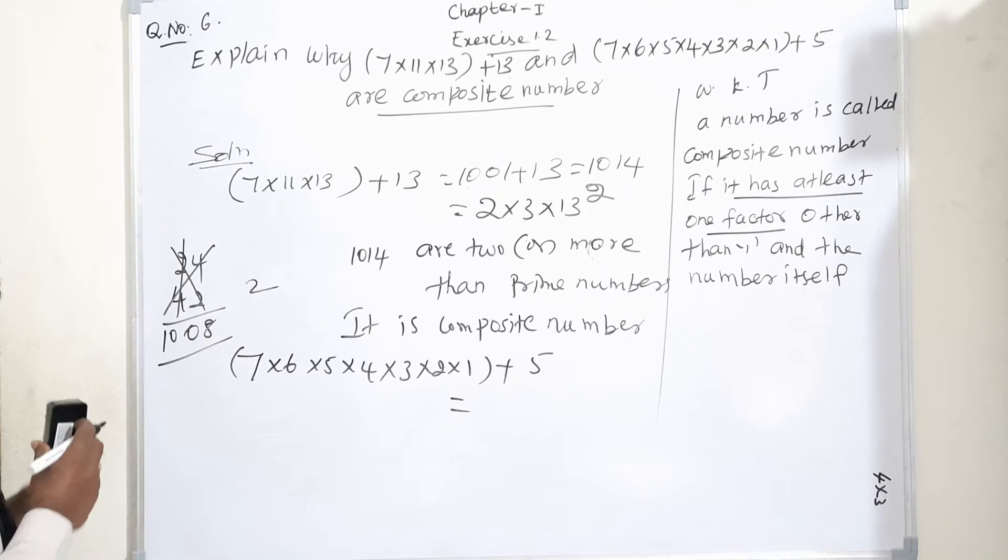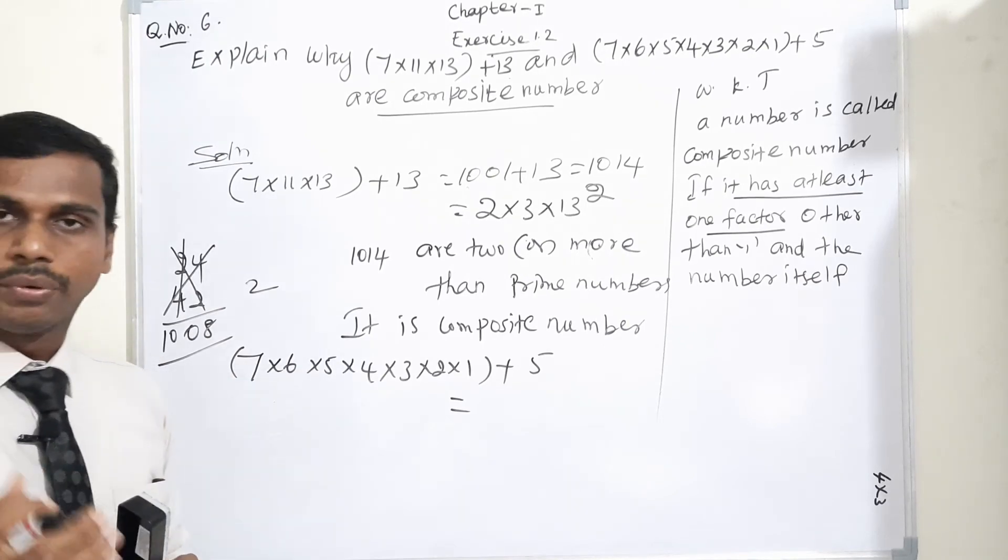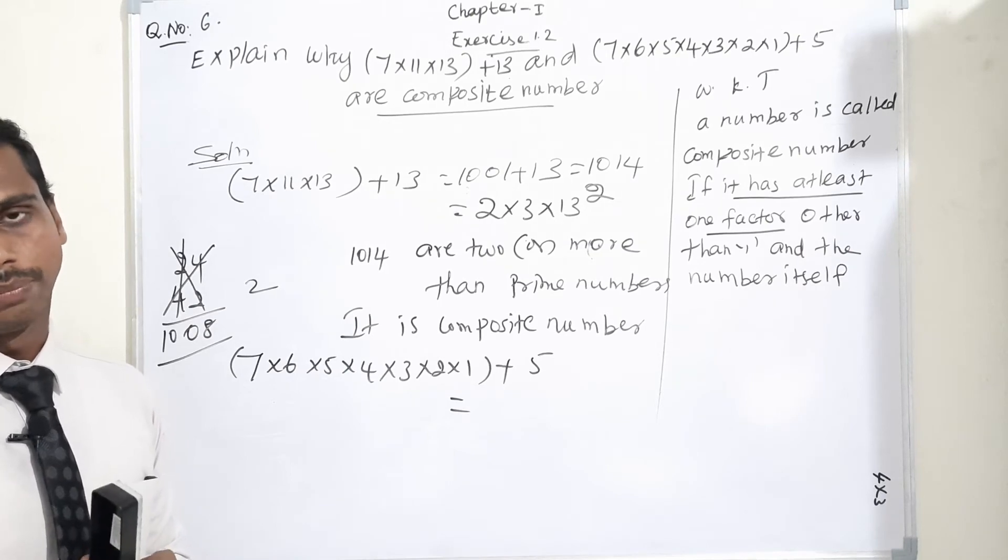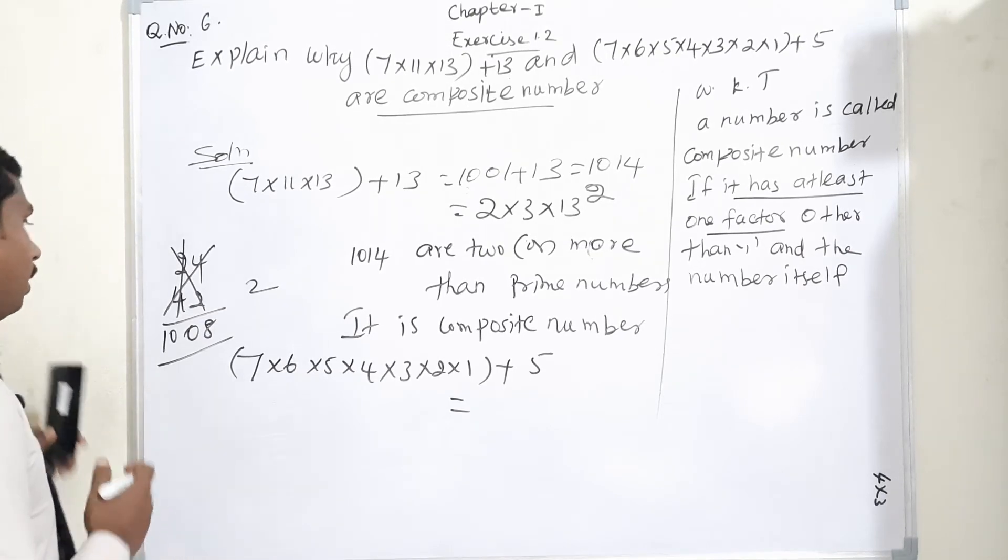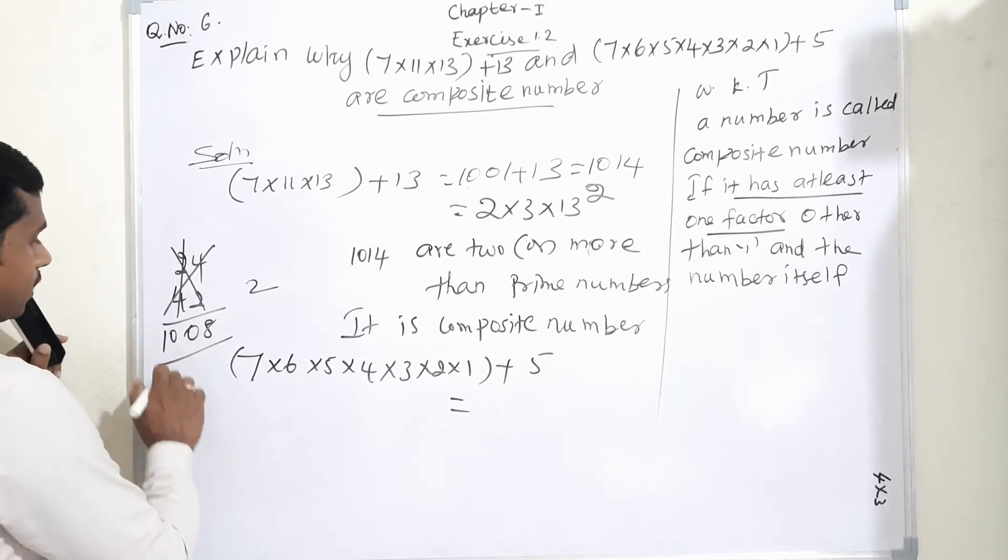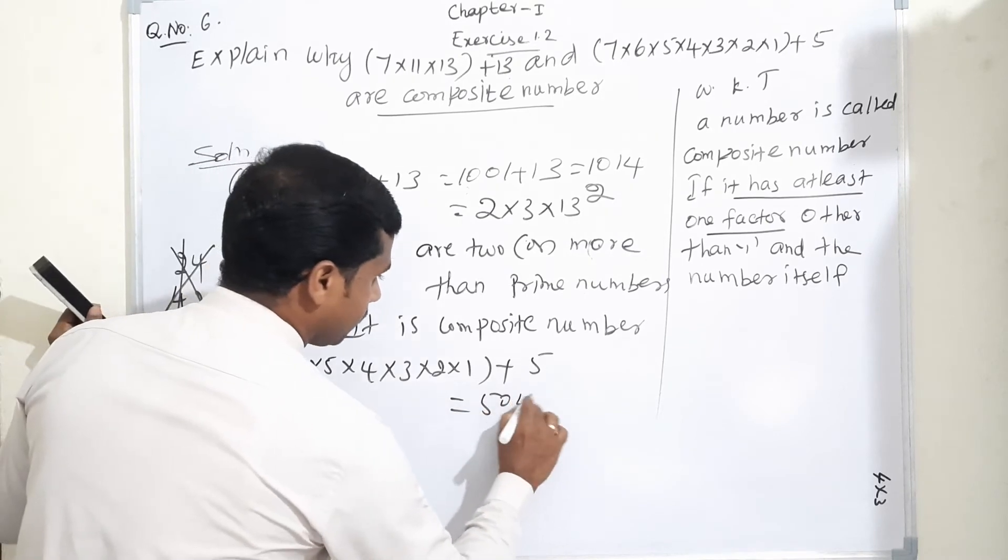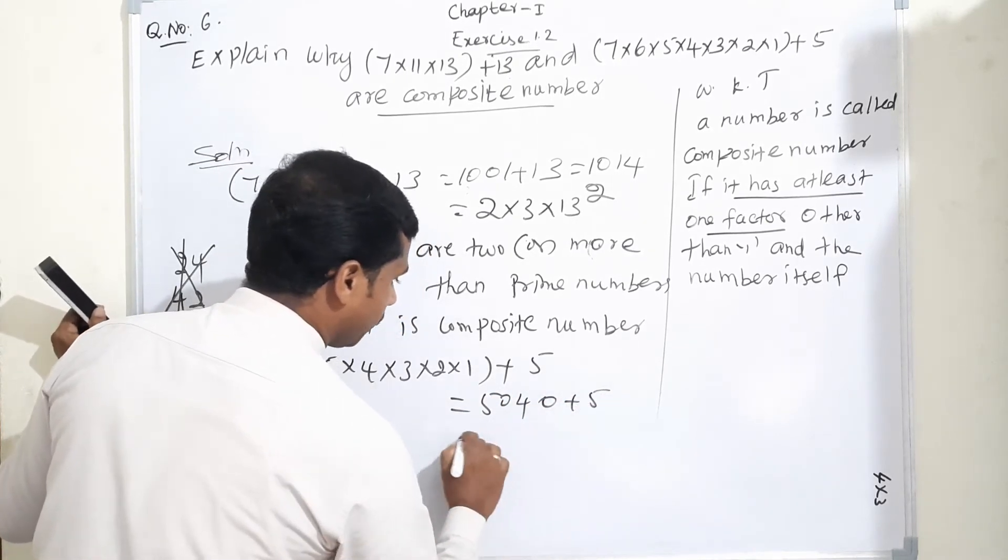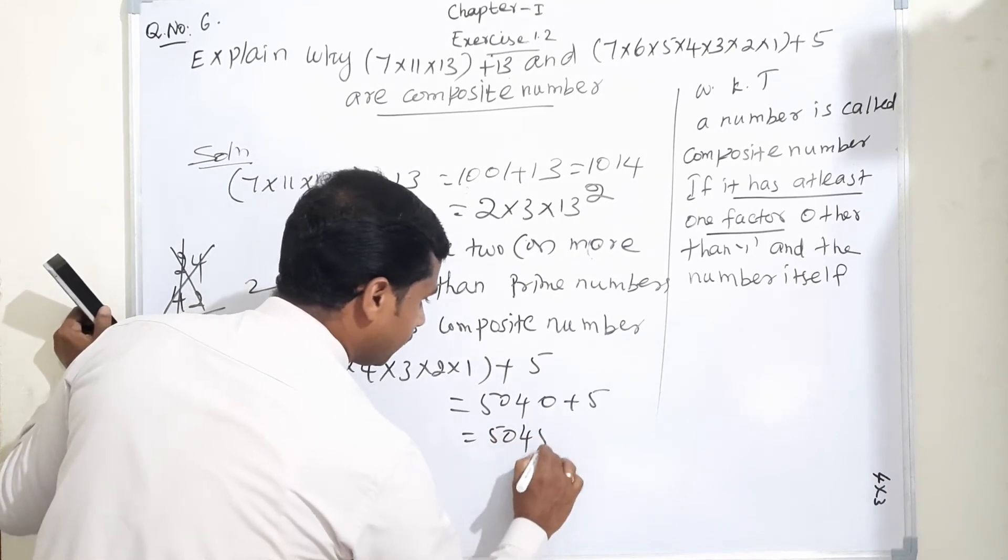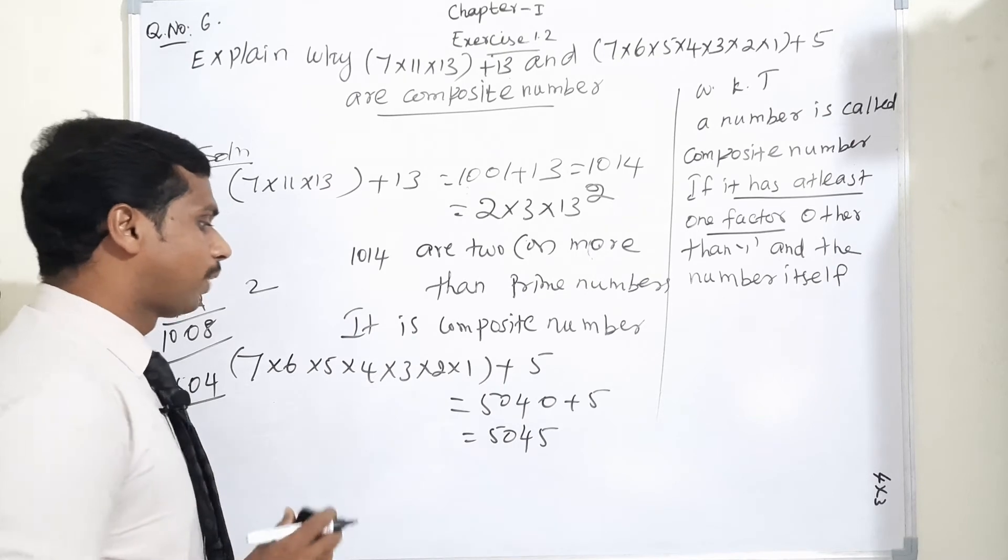Half of 1008 times 5 means very easy short trick. I have given in Vedic max multiplying by 5 and 15. If you need, just go to the link, you will get a clear idea. So half of 1008 is 504, then add 1 zero. That is 5040 plus 5, which equals 5045. What is the answer? The second condition equals 5045.